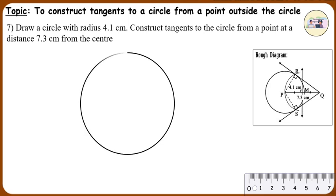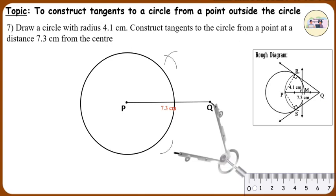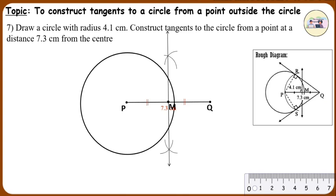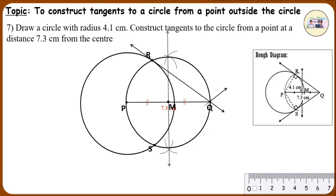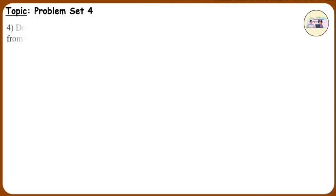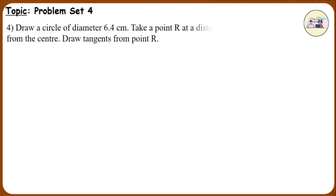Steps of Construction: Construct a circle of radius 4.1 cm with center P. Take a point Q in the exterior of the circle. Draw segment PQ using a ruler. Draw the perpendicular bisector of segment PQ to get its midpoint M. Draw a circle or an arc with radius PM and center M. Name the points of intersection of the two circles as R and S. Draw lines QR and QS. Lines QR and QS are the required tangents.